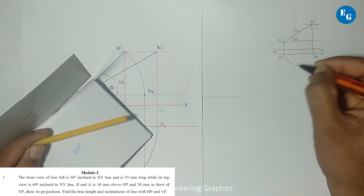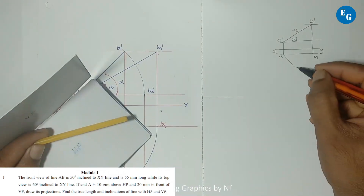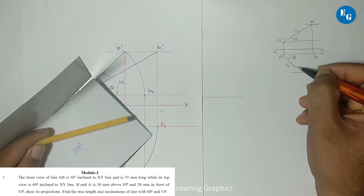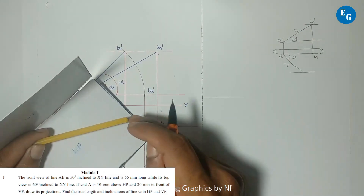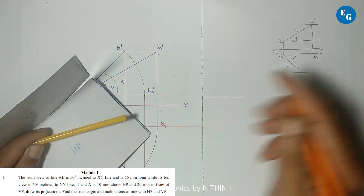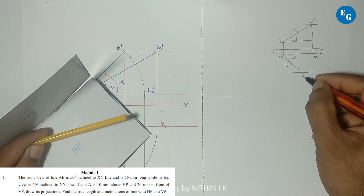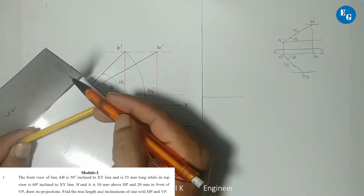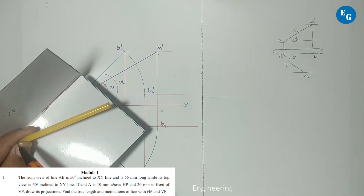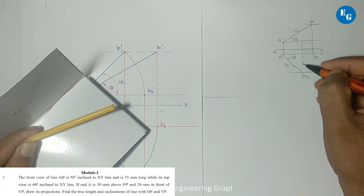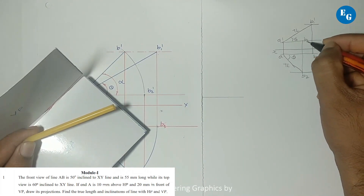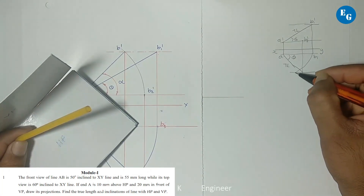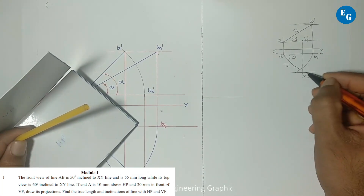The value of VP is phi. The true length is at 5 degrees. The position is B2. The top view is B2. The front view of B2 dash — A dash and A dash is the same height length. This is B2 dash, A, B1 radius, B2 E, and locus.